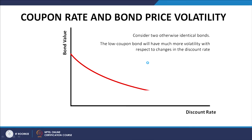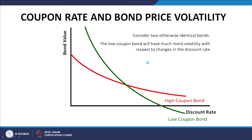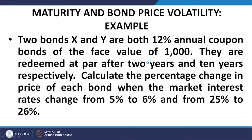This is the expression for the coupon rate: the higher coupon rate bond is again less sensitive — the magnitude of the slope is less — and the low coupon rate bond is more sensitive, the slope is greater.